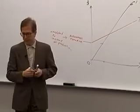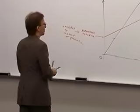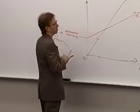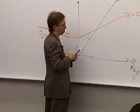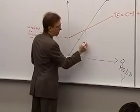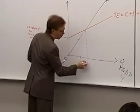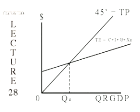Equilibrium occurs at the point where total expenditures equal total production — QE or YE, depending on the symbols you use. That's the equilibrium level of income.